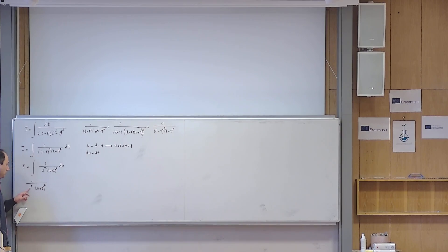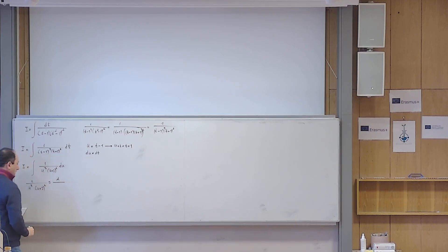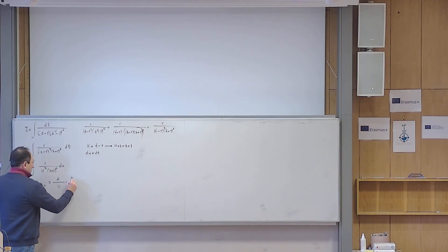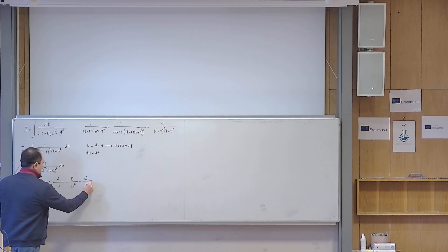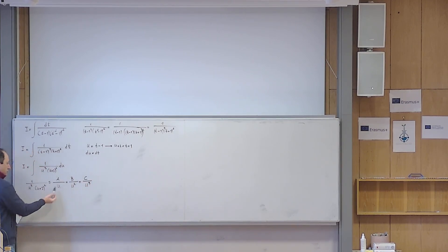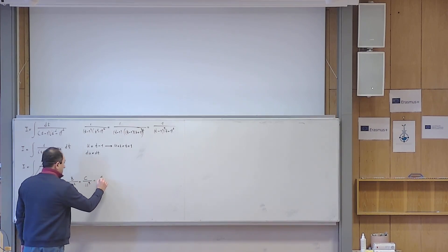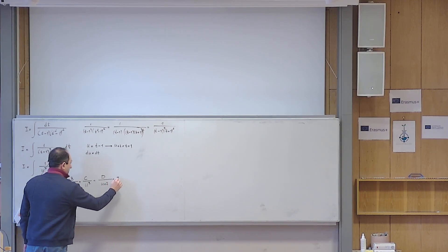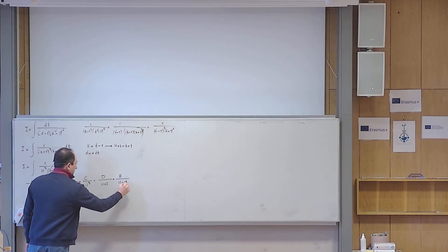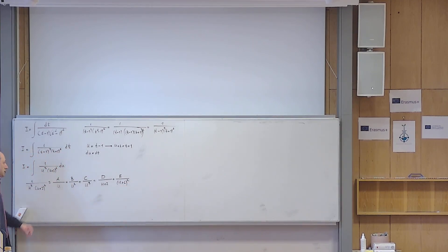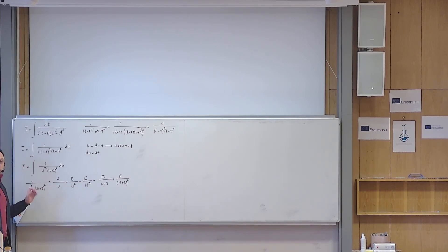Because all the base factors are first degree polynomials, I write the partial fraction decomposition as: A over u, plus B over u squared, plus C over u cubed, plus D over (u plus 2), plus E over (u plus 2) squared. I start from the first power of each first degree factor and increase the powers one step at a time, placing constants in the numerators. I have to tune these constants A through E so that the right-hand side matches the left-hand side for all values of u.